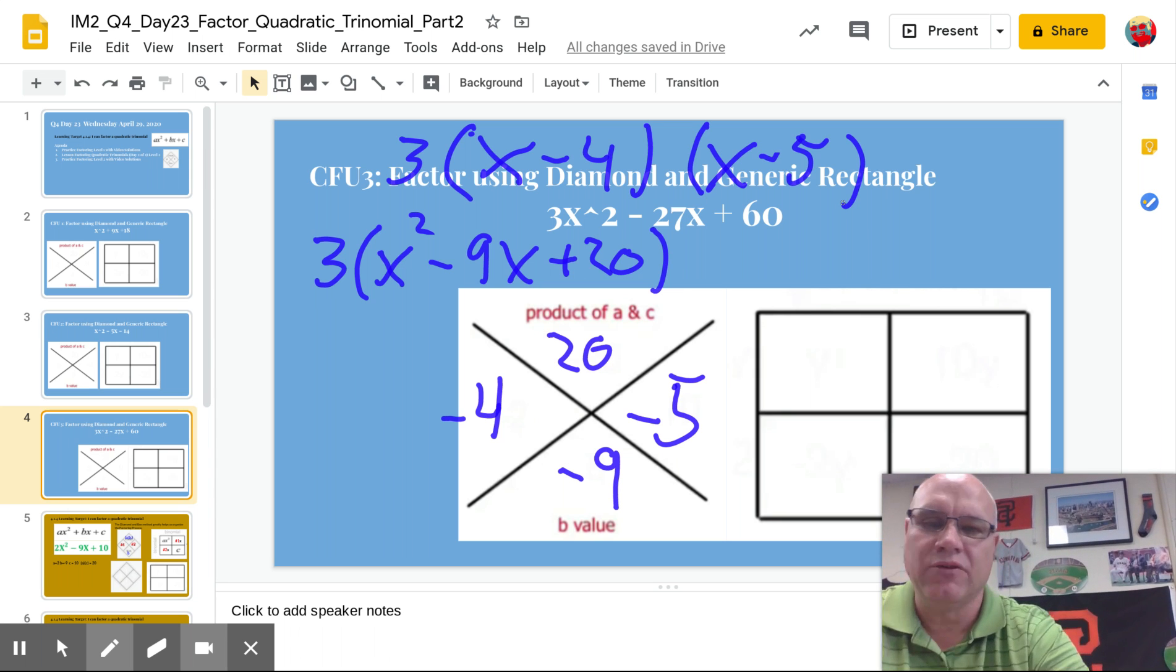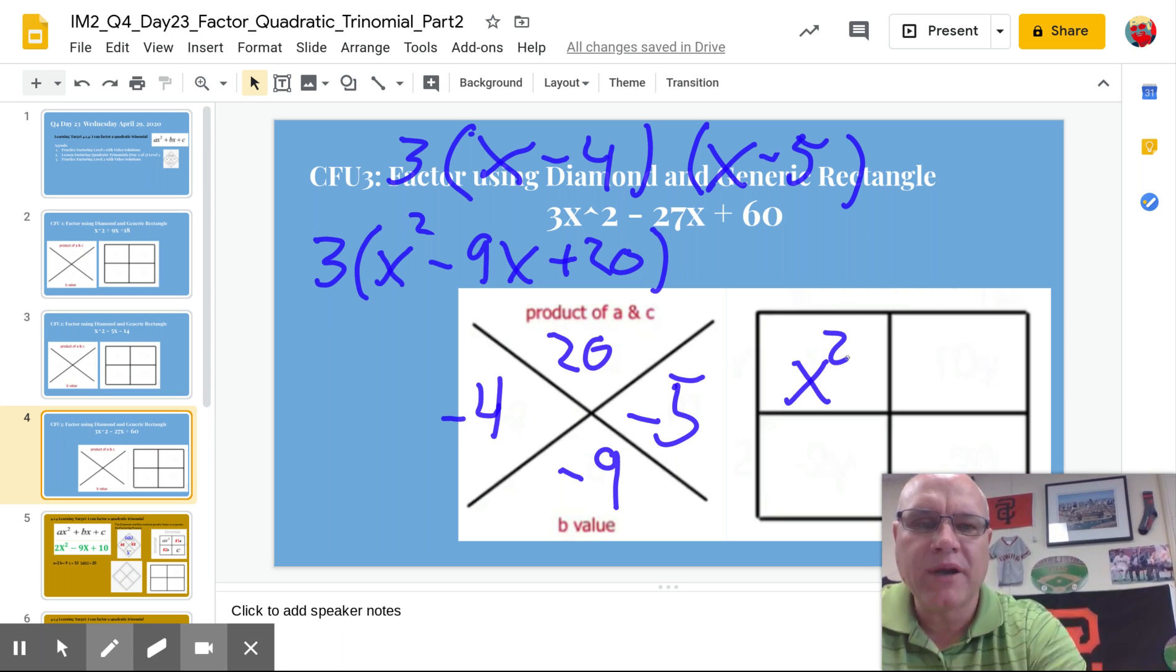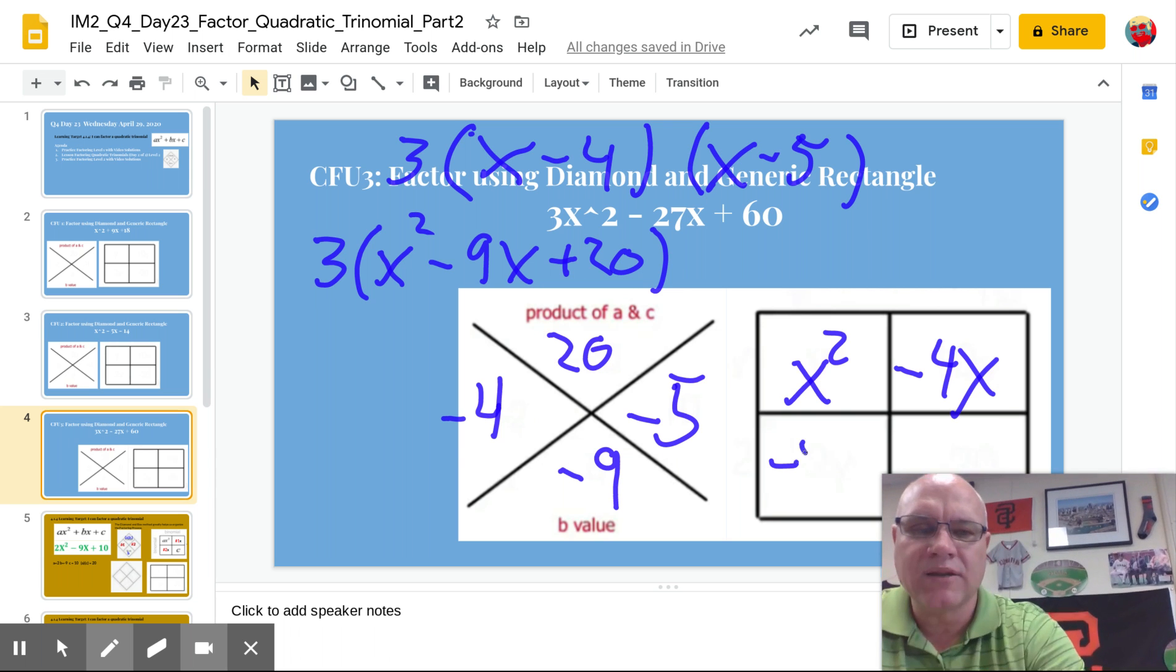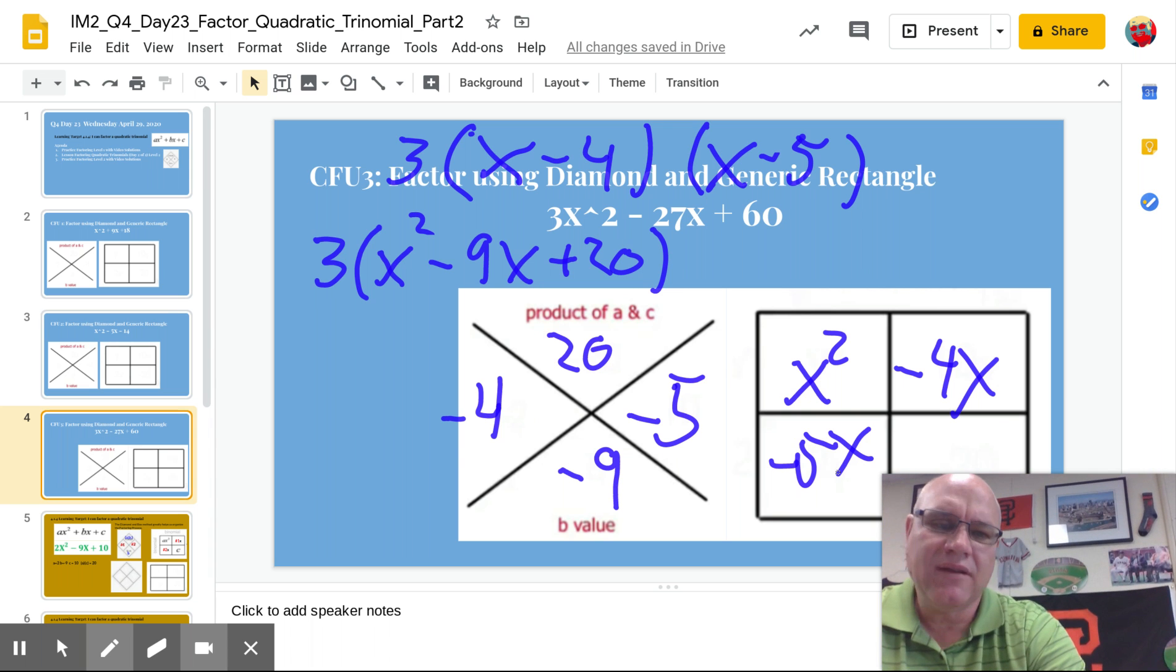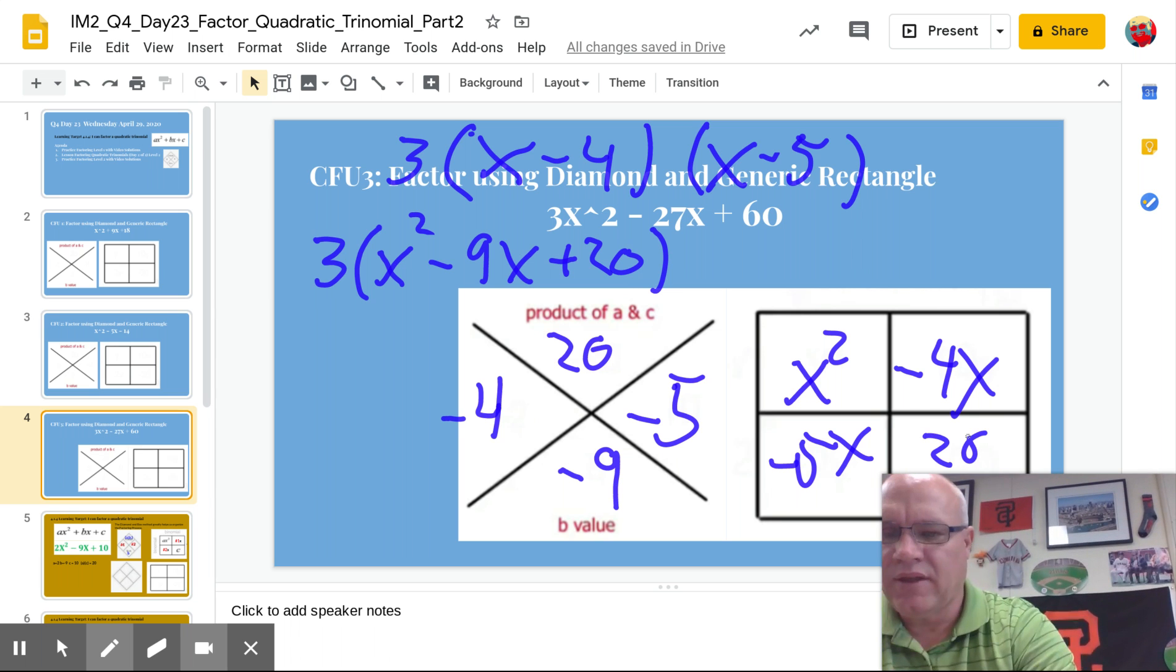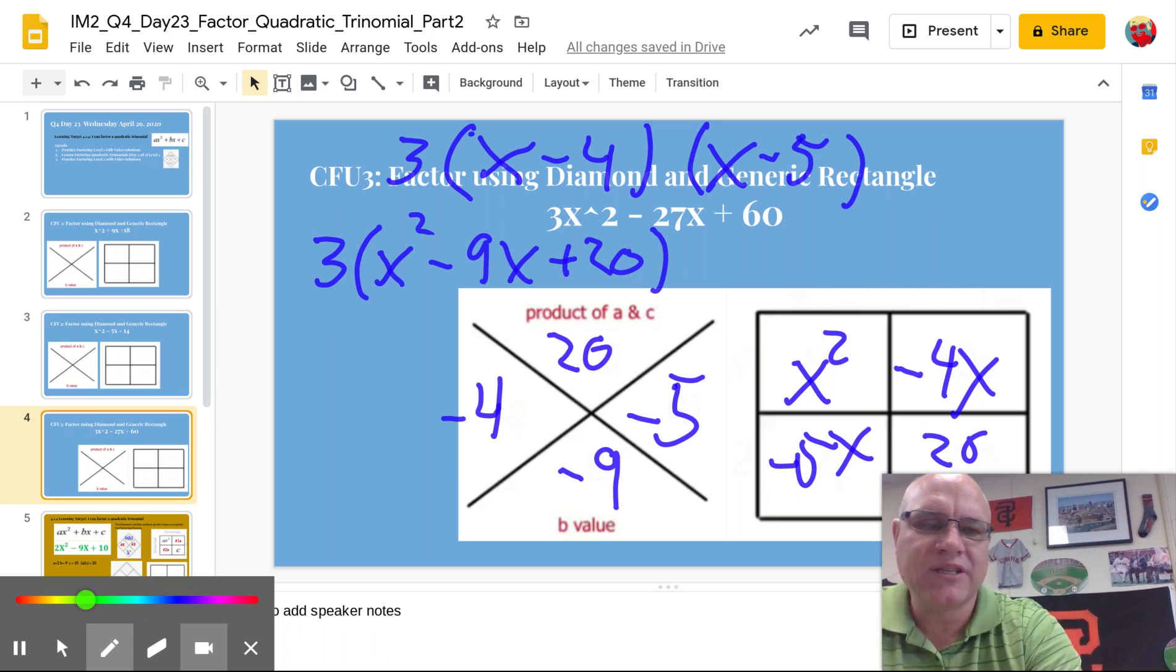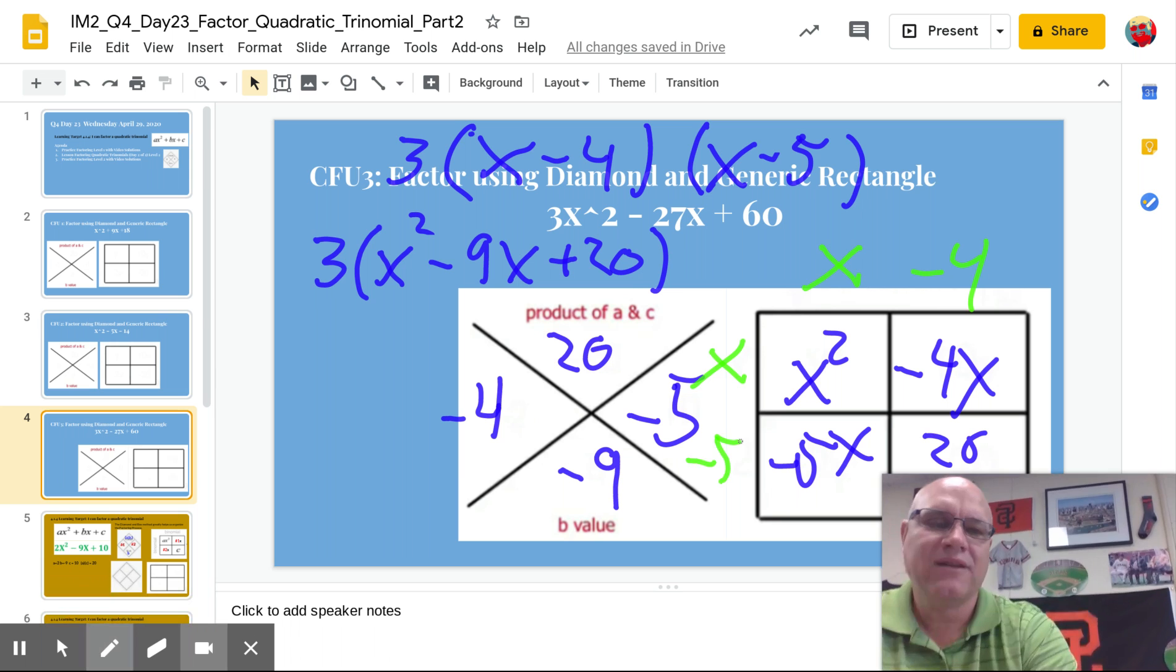But let's go ahead and do it with the generic rectangle. So we have x squared would have been up here. We would have said, okay, this is minus 4x, this is minus 5x, and then this is my c value, which is the 20. Okay. So then we would pull out the GCF. We're going to get x here, x here. x times what's negative 4x? Oh, negative 4. x times what's negative 5x? Oh, negative 5. See how it's x minus 4x minus 5?